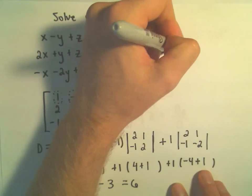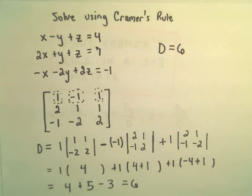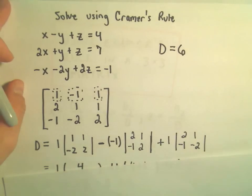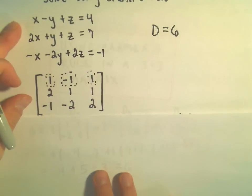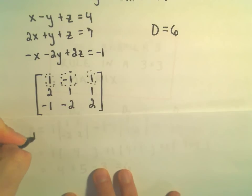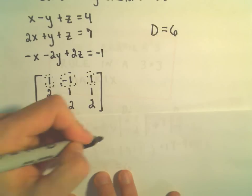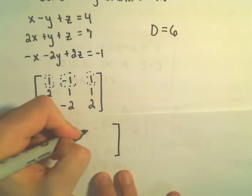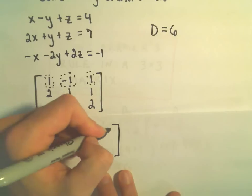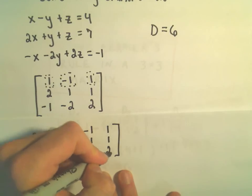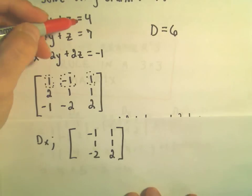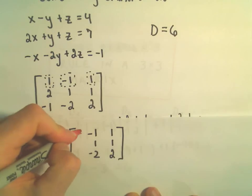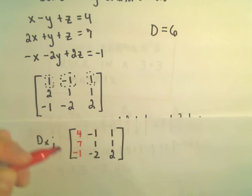So our D value equals 6. Now we have to compute D sub x, D sub y, and D sub z. To compute D sub x, we leave the y column and z column alone, and replace the x column with the values on the other side of the equal sign: 4, 7, and negative 1. Now we compute this determinant.